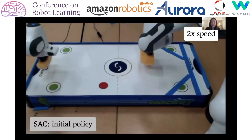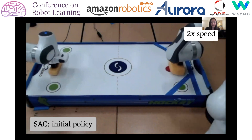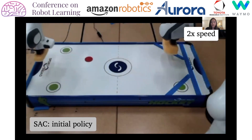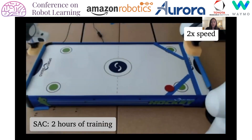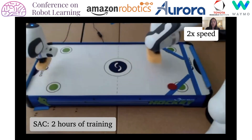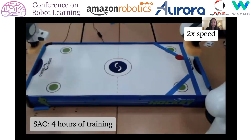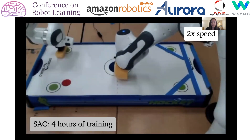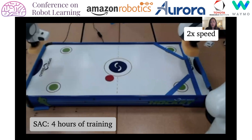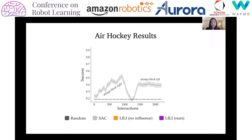We first trained a policy with Soft Actor Critic, a standard reinforcement learning algorithm which doesn't model the opponent. Because it doesn't anticipate the opponent's strategies, this agent learns to only block one mode — the right side. Near the end of training, it switches to blocking left instead every time, which earns it a higher reward. The final policy achieves about a 40% success rate.